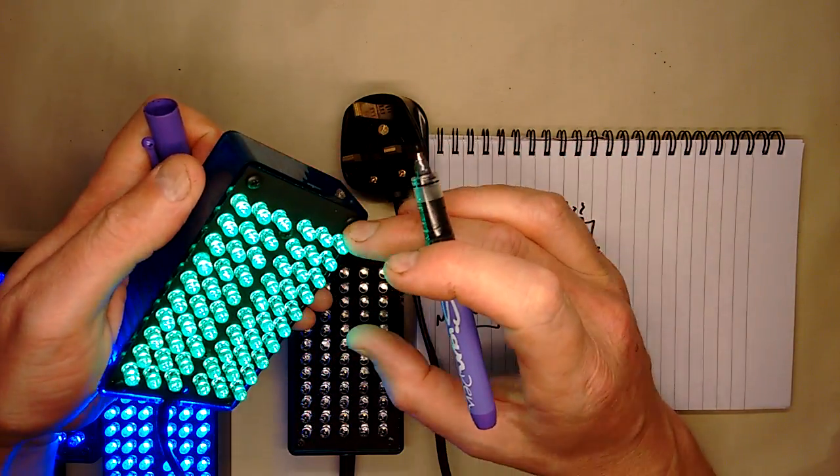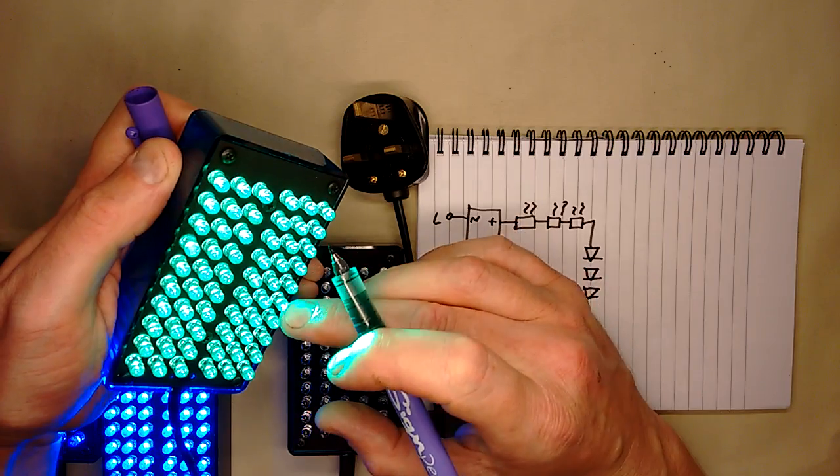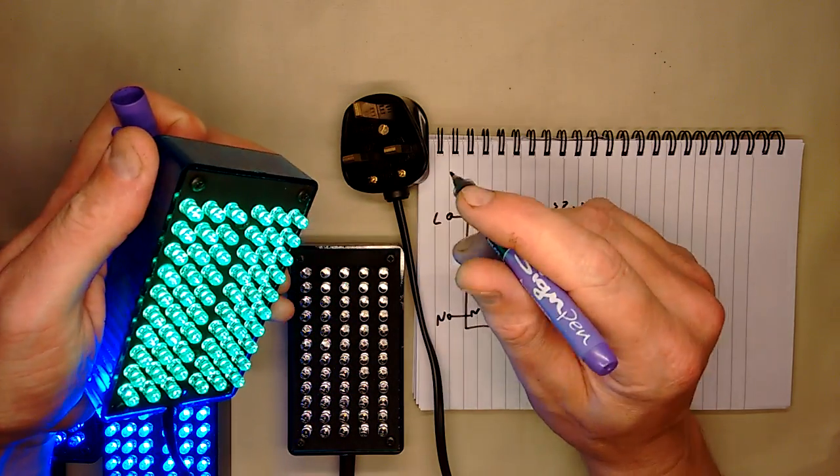But this one has 1, 2, 3, 4, 5, 6 by 1, 2, 3, 4, 5, 6, 7, 8, 9, 10. So it's got 60 LEDs.